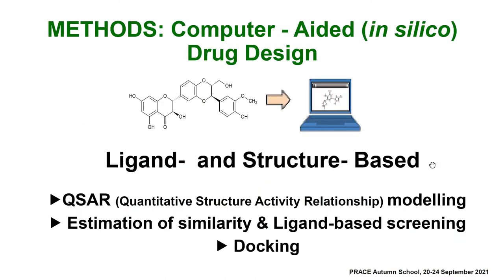The main methods are in silico or computer-aided drug design — representatives of ligand- and structure-based methods. Each group has its advantages and disadvantages, and combining both methods when possible allows more effective research. Among the ligand-based methods we use QSAR modeling, virtual ligand-based screening, and estimating similarity between compounds. Among the structure-based methods we use docking.